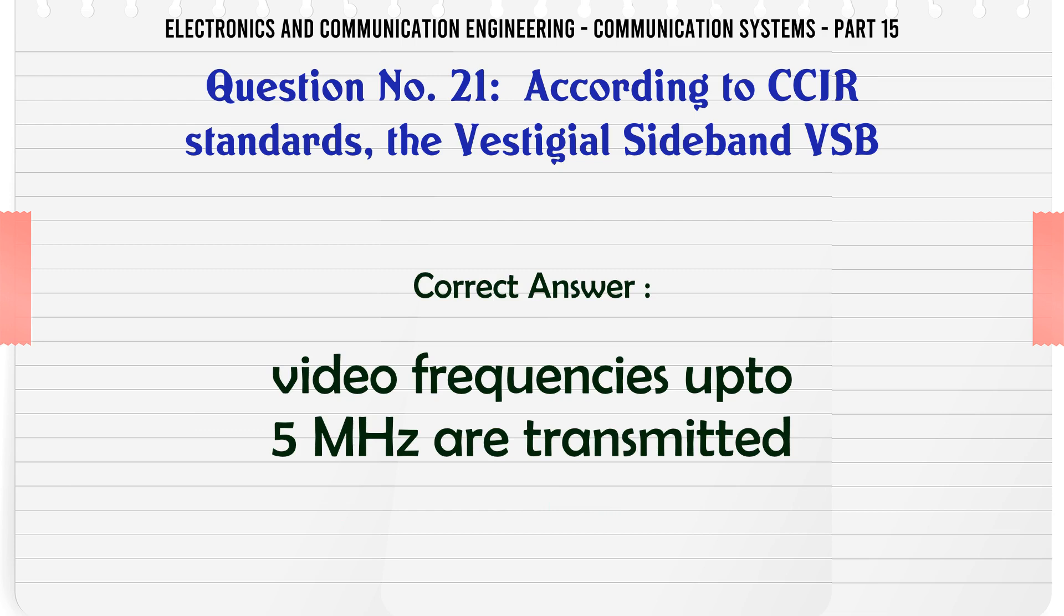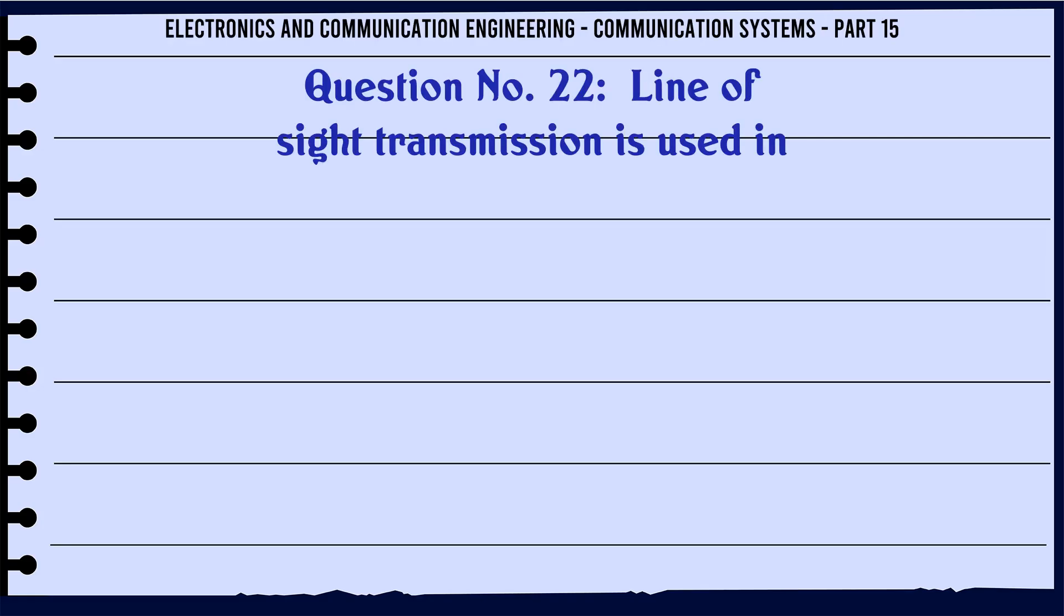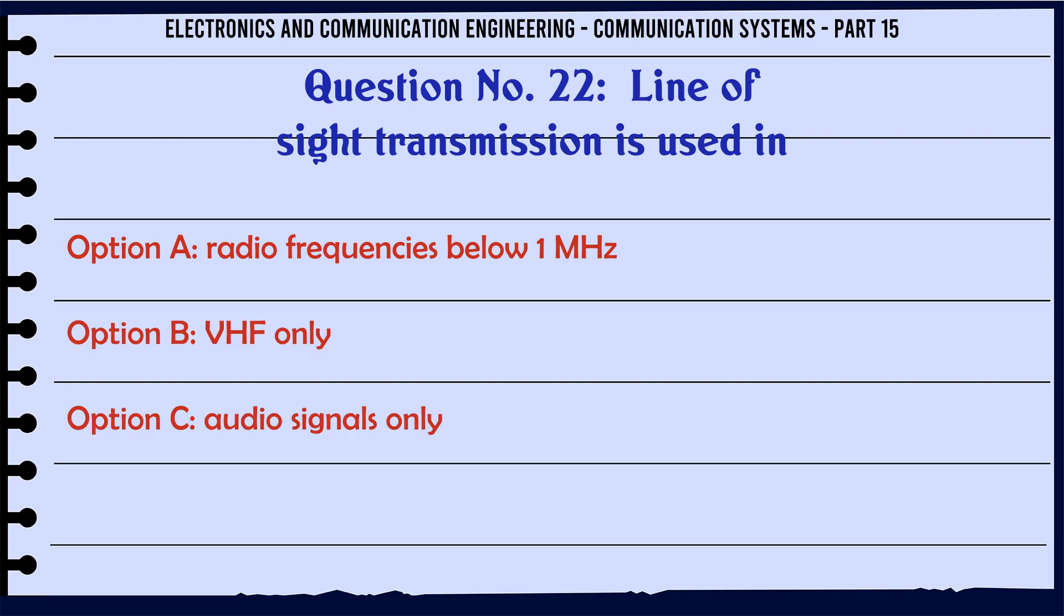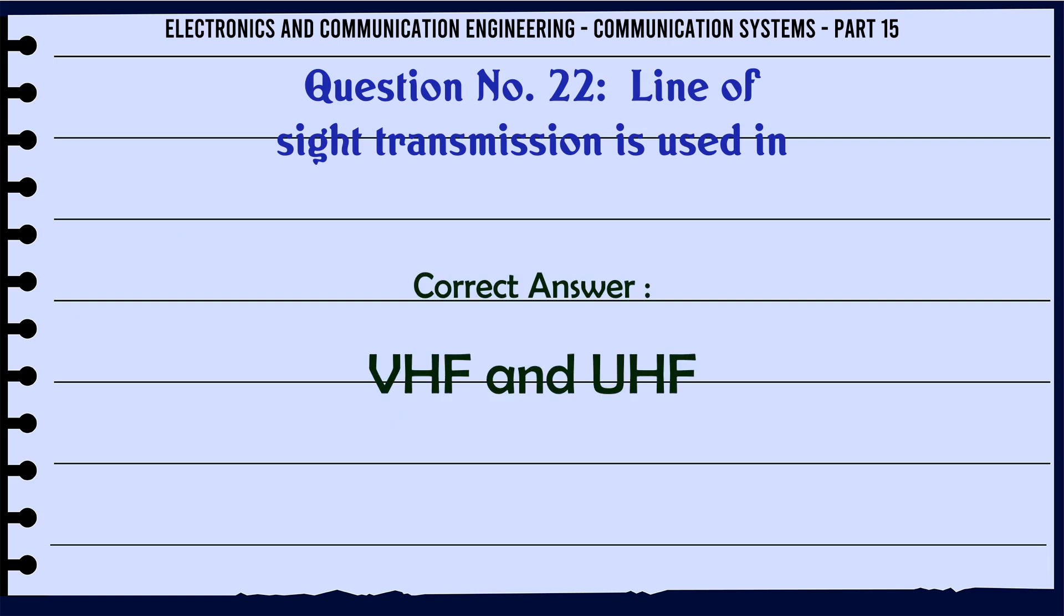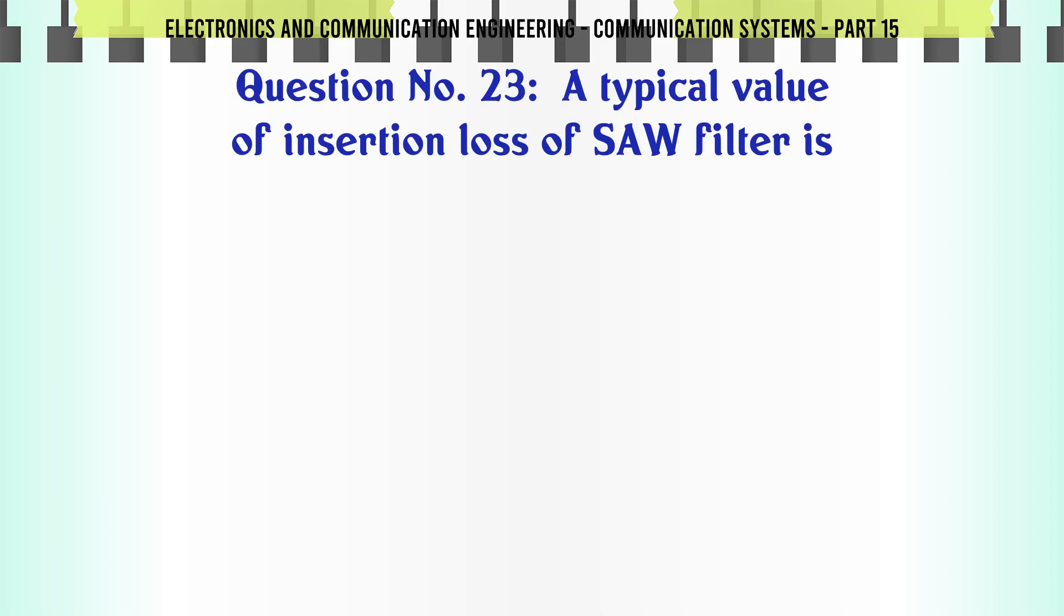Line of sight transmission is used in: A radio frequencies below 1 MHz, B VHF only, C audio signals only, D VHF and UHF. The correct answer is VHF and UHF.